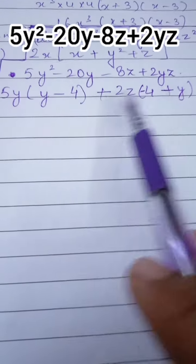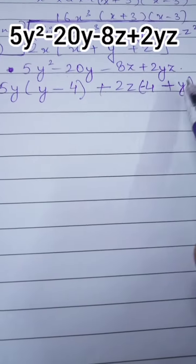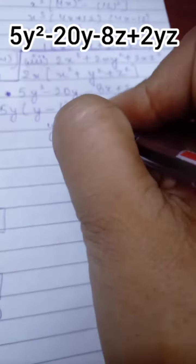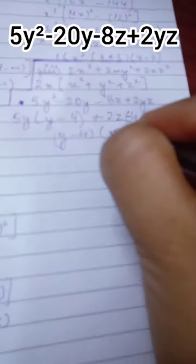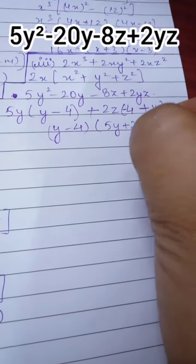If we have seen these two brackets, then these two brackets are the same: this is y minus 4, y minus 4. Take y minus 4 outside as common. Now the remaining part is 5y plus 2z.